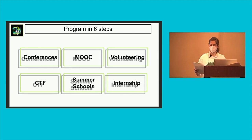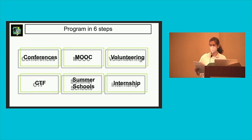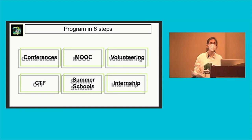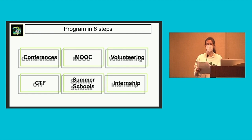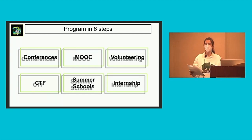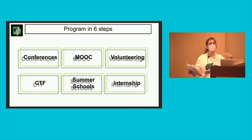The six steps were: CTF — capture the flag — to learn by doing; conferences to get different points of view on cyber security; MOOCs and tutorials for the theory; summer schools to have contact with academic professionals and meet experts in the field; volunteering to meet other InfoSec enthusiasts; and finally, an internship to put it all in practice. I also added an analysis grid of transferable skills from previous experience, because some skills from prior roles are actually applicable to cyber security.